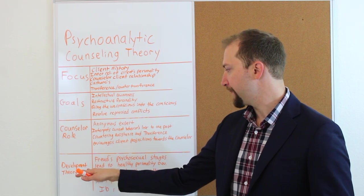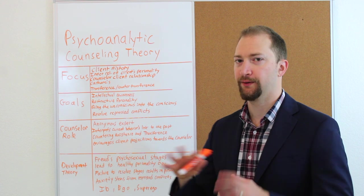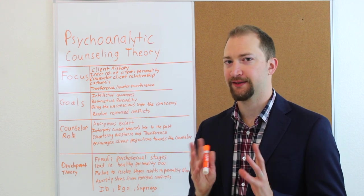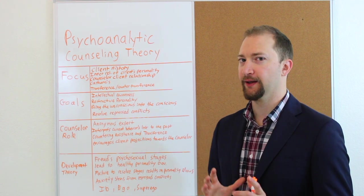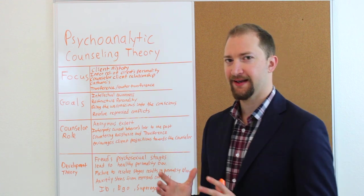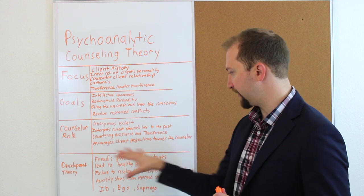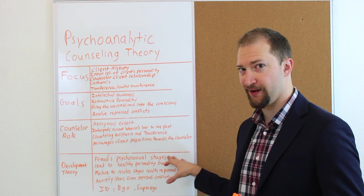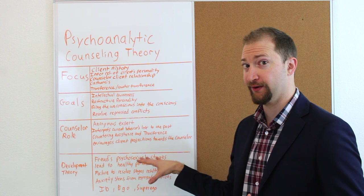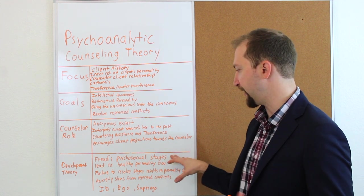So now we're going to cover development theory. Freud had his own theory. He had his own philosophy with this, where he developed what he called psychosexual stages. And I'm not going to go into that. There's a lot of details in there. There's all these stages. You could research that on your own. If you're a counseling student, you're going to have to know this for your exam, if you're going to get licensed.